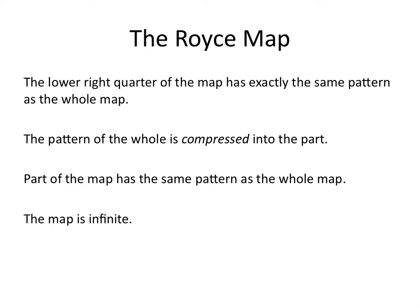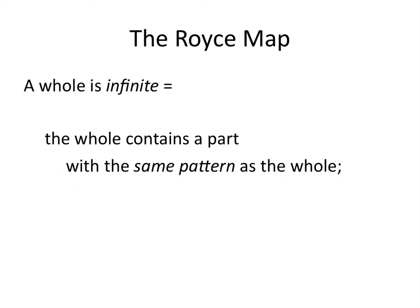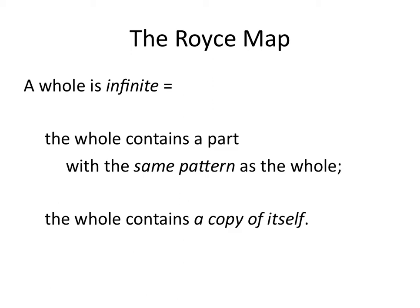These four features of the map are going to be connected. A whole is infinite — what does it mean to say a whole is infinite? A whole is infinite means that the whole contains a part with the same pattern as the whole. The whole contains a copy of itself, like mirrors nested in mirrors nested in mirrors, or reflections in reflections in reflections.